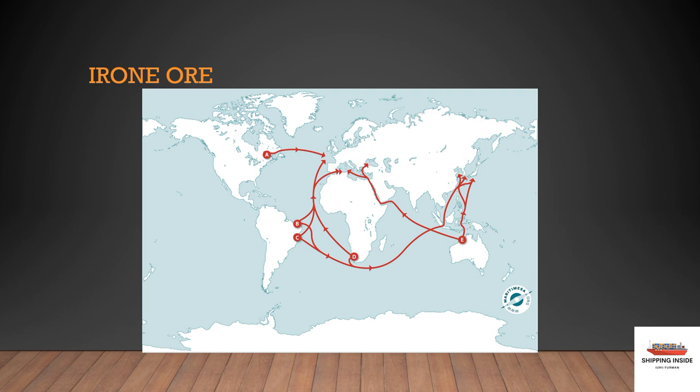Iron ore. Most of the world's metals are produced from smelting mineral ores, such as iron ore which produces steel, or bauxite which produces aluminum. In most cases the process is carried out at some considerable distance from where the ore is mined. The main iron ore exporters are Australia, Brazil, South Africa, Canada, Sweden, Norway, and Mauritania.